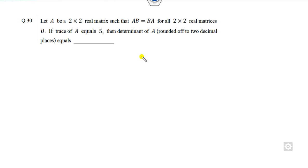Okay, look at the 30th question. So A is a 2 × 2 real matrix such that AB is equal to BA, where B is again a 2 × 2 real matrix. Okay fine. So what is the meaning of that? If AB is equal to BA, it means both A and B commute to each other. That is the meaning of this. Both A and B are commute to each other.